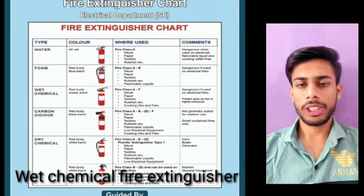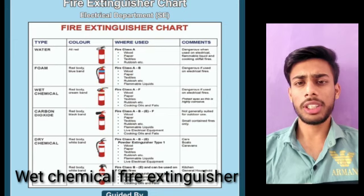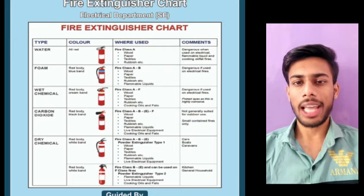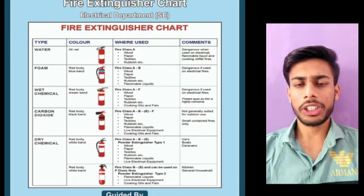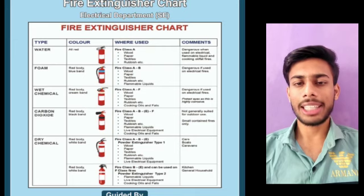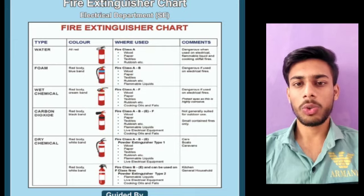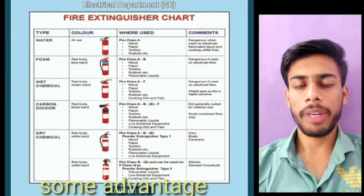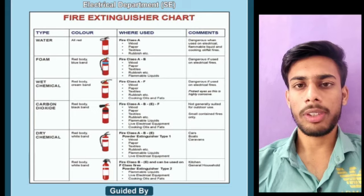The wet chemical fire extinguisher is a new innovation in the fire industry. Its body is red with a cream band. This extinguisher is used for fire class A and F, which involves food, paper, textile, rubbish, and cooking oils and fats. One advantage is that it is the best fire-fighting medium for fires involving cooking fats.